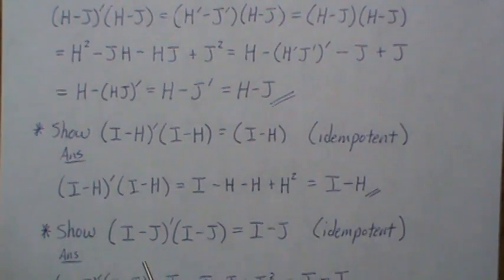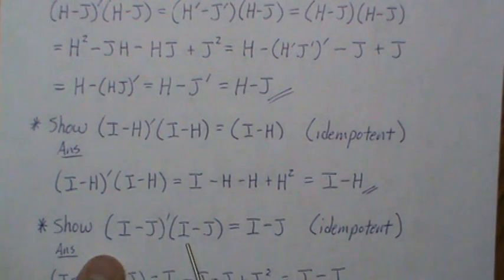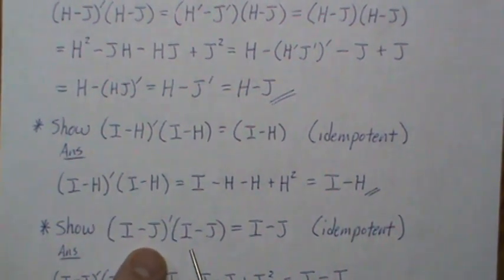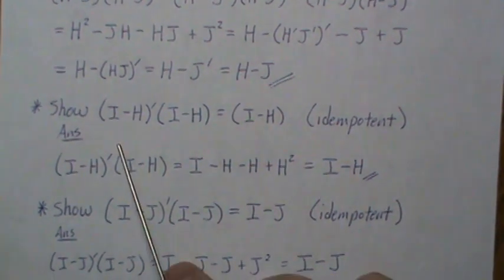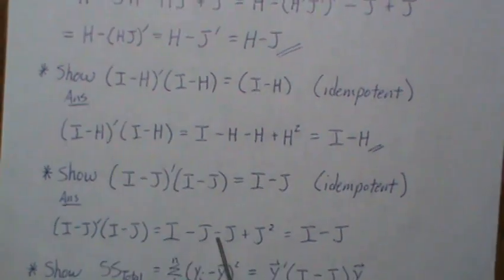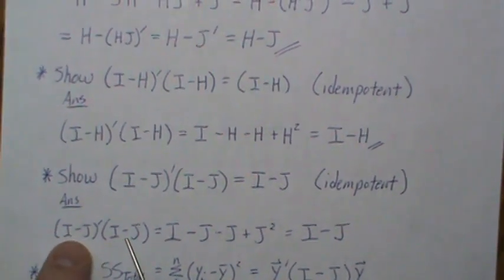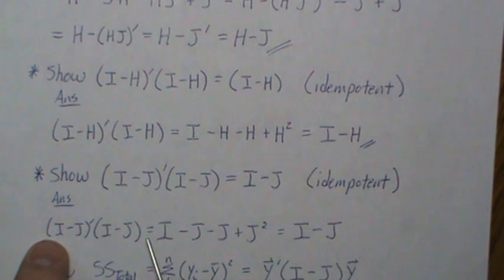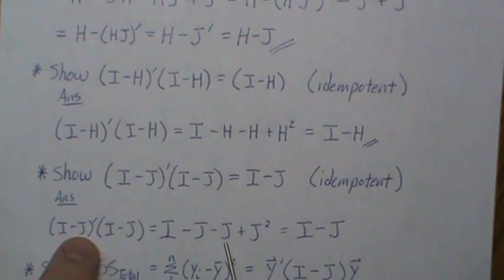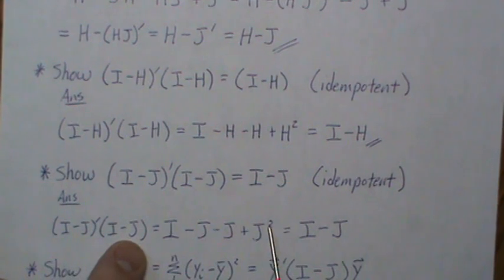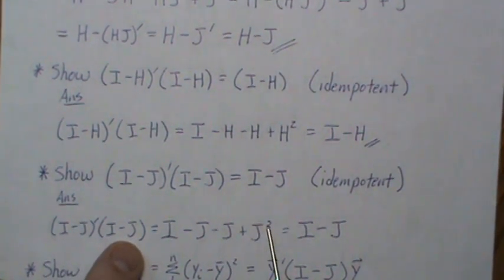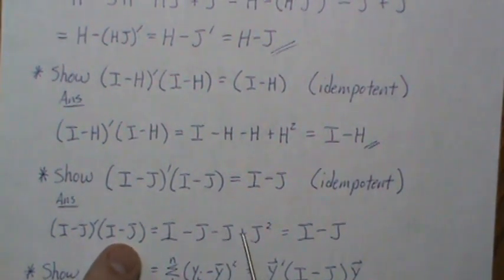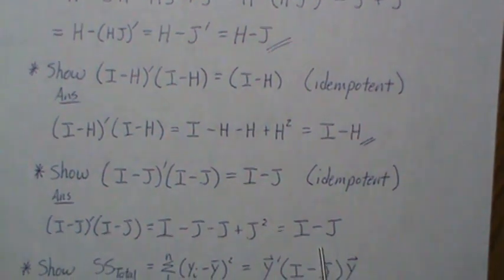One more: (I−J) is idempotent, where I is the identity matrix. Since I and J are symmetric, (I−J)'(I−J) = (I−J)(I−J) = I − J − J + J². J is idempotent so J²=J, giving −J+J that cancels, leaving I−J. Now we jump into the main result.